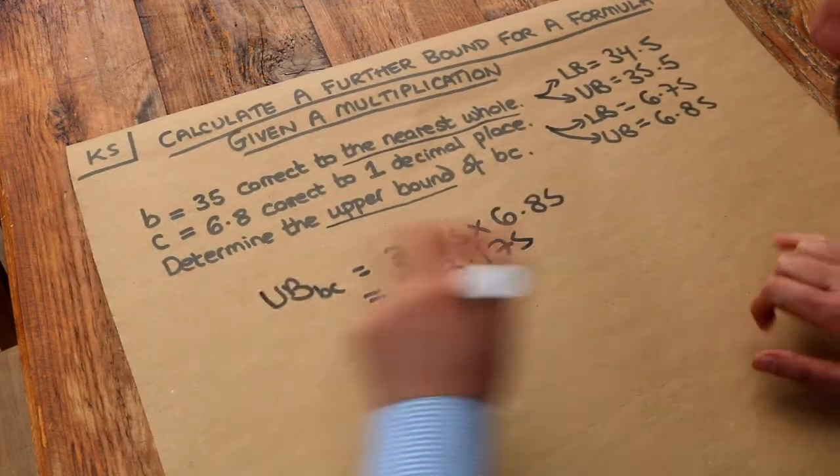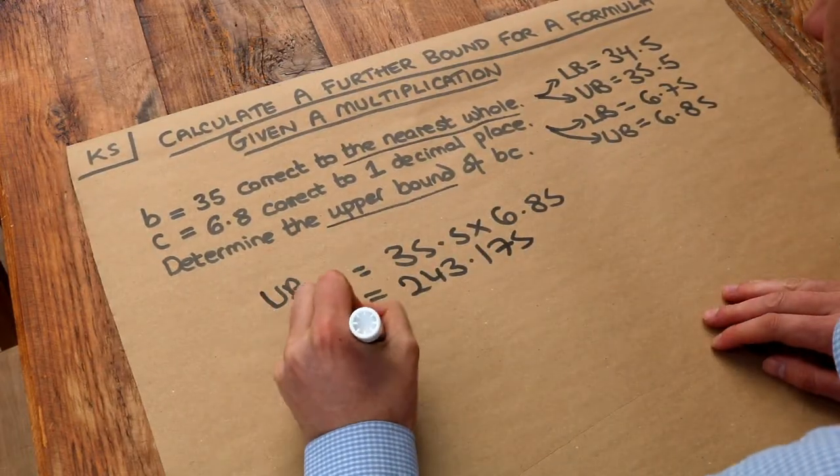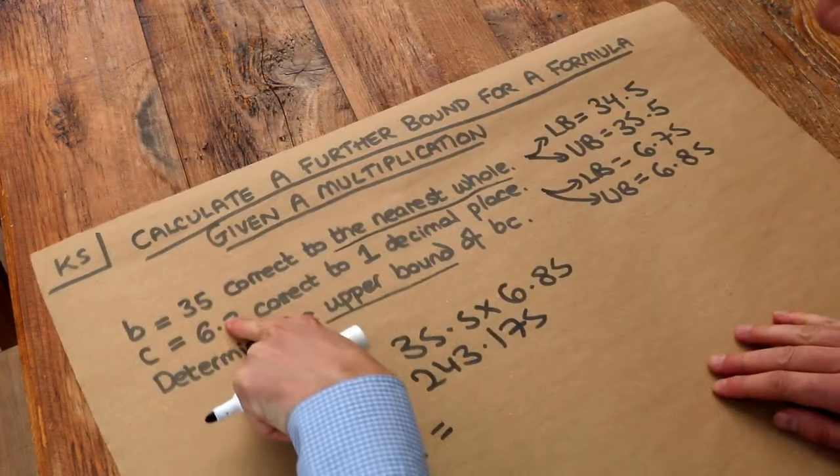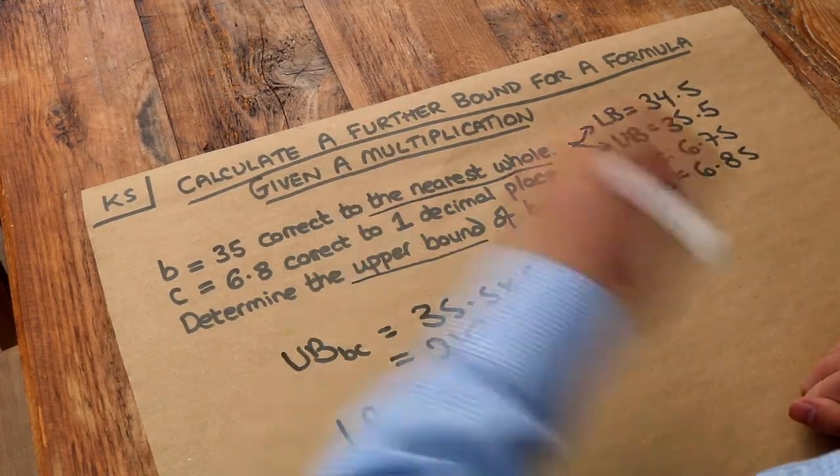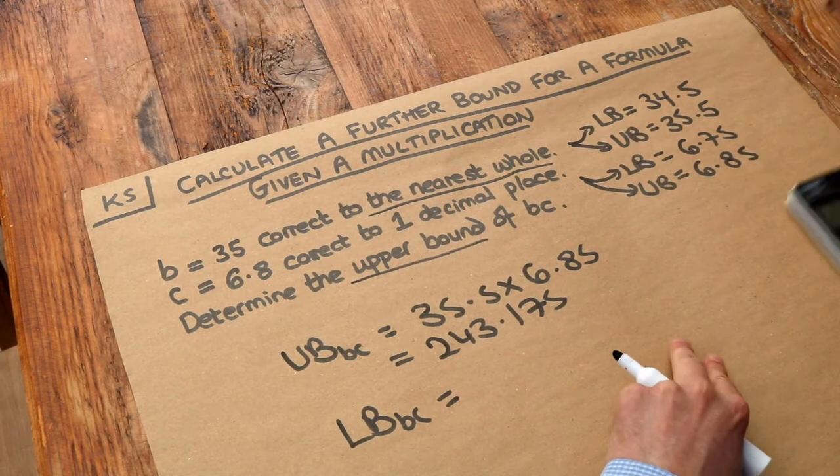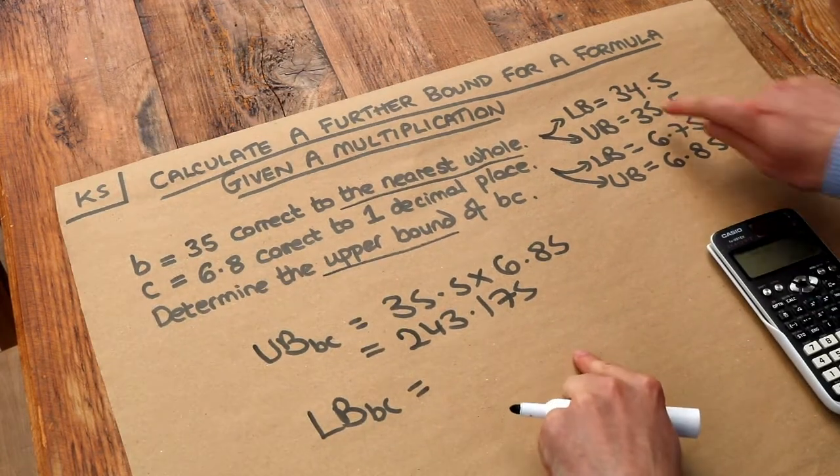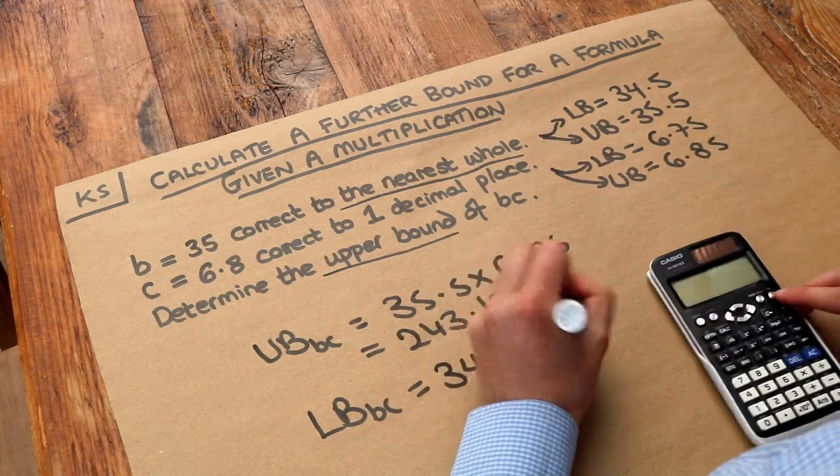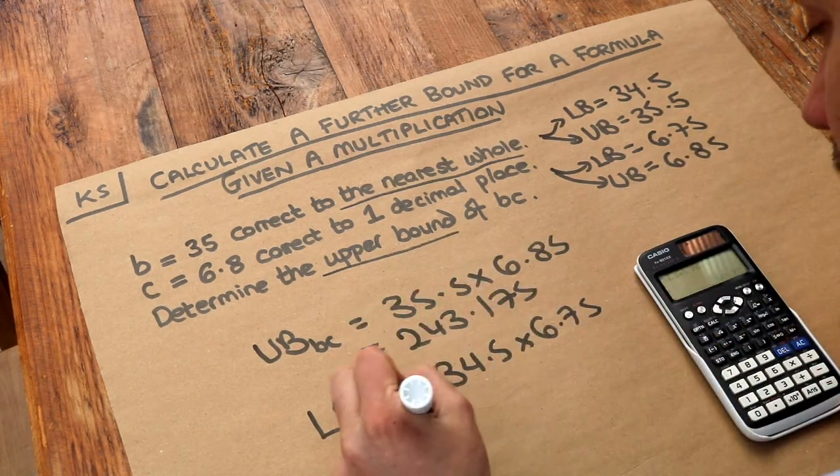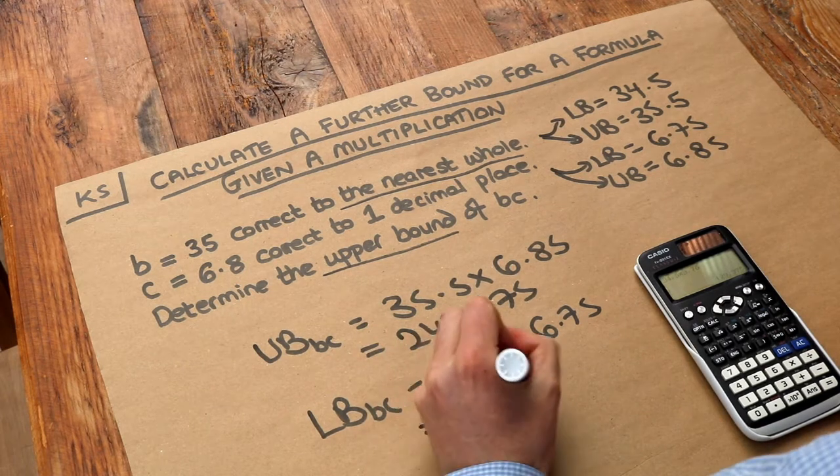Now it doesn't ask for it, but let's just say we wanted to find the lower bound of BC. If we're multiplying these two together, we want to multiply the smallest two possible numbers to end up with the smallest possible number. So we're going to use the lower bound in both cases, say 34.5 multiplied by 6.75, and we get 129.35.